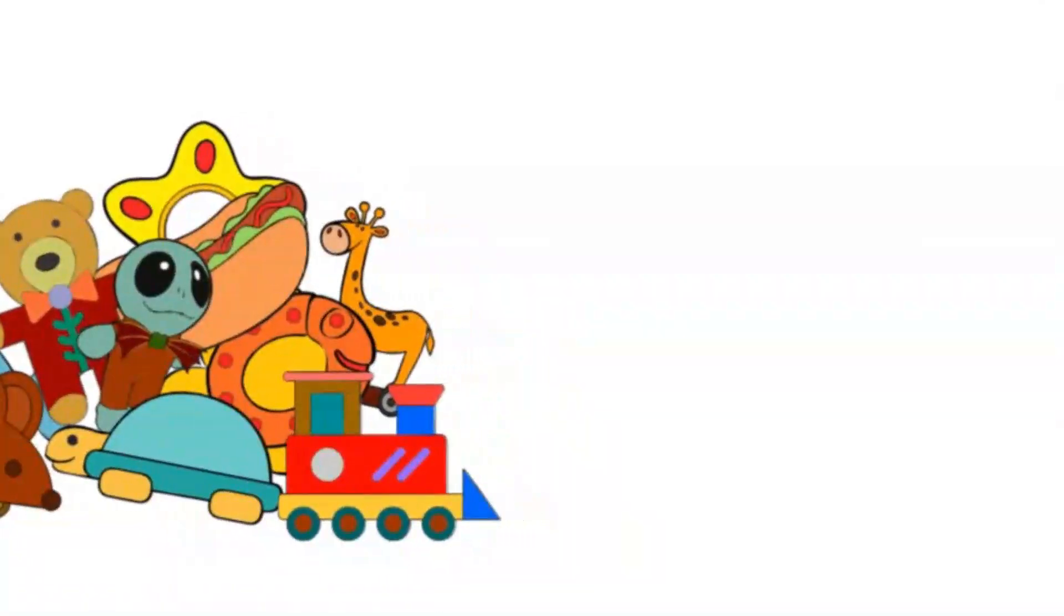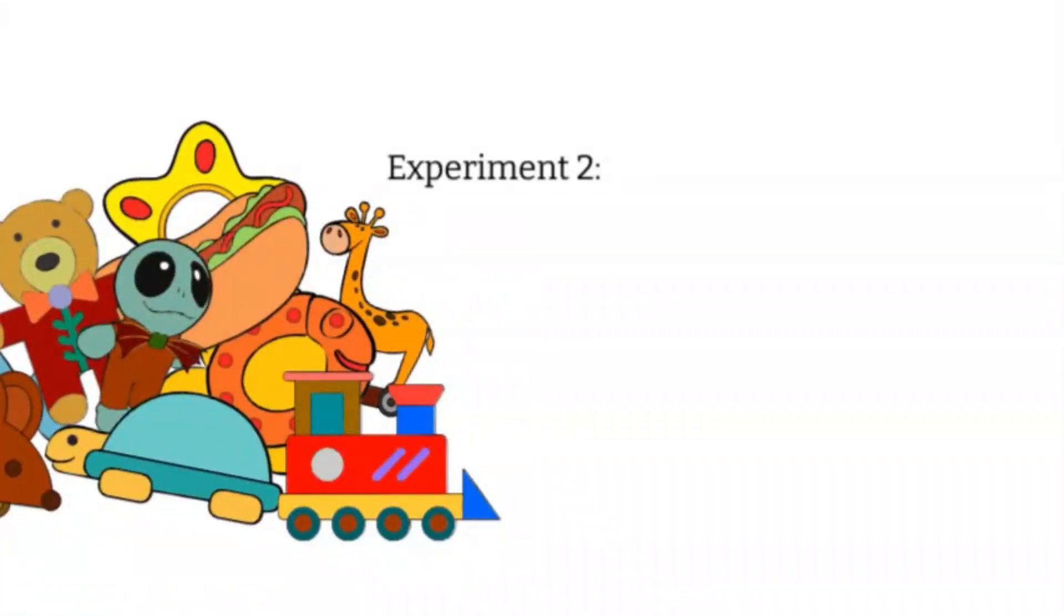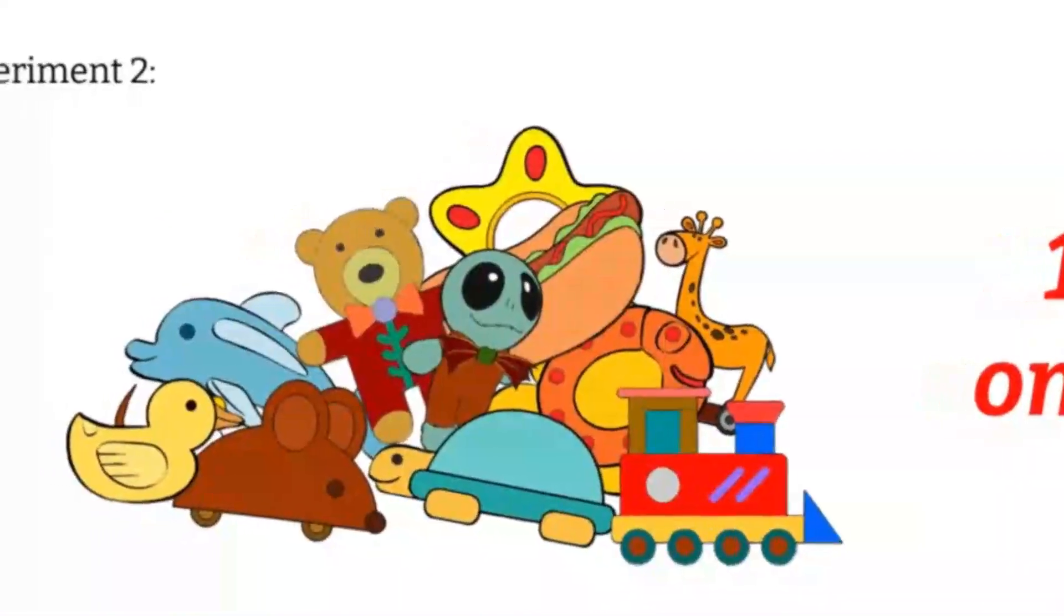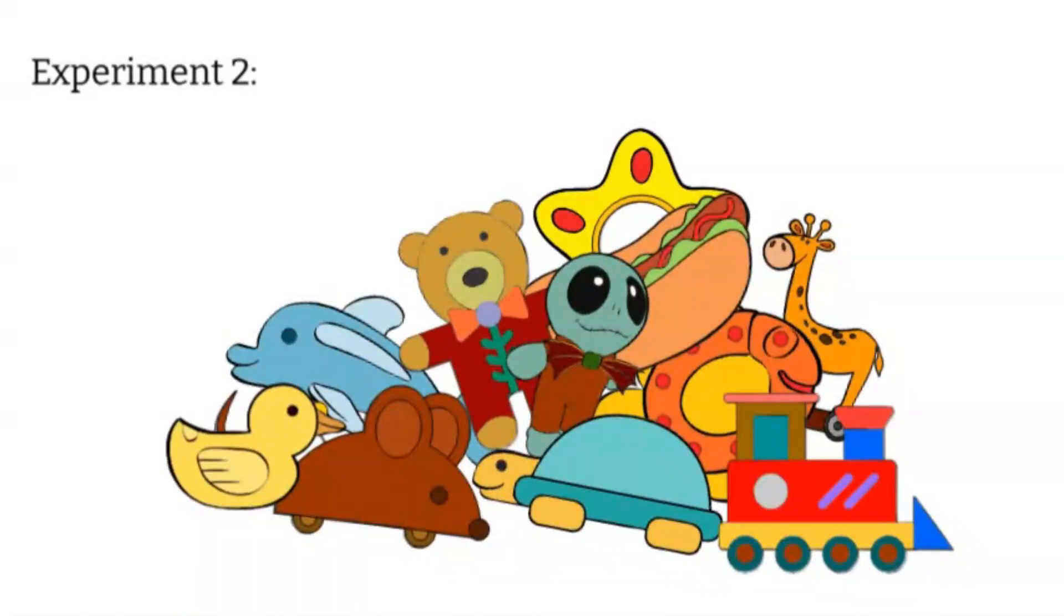In the second experiment, we doubled the difficulty level and asked the dogs to learn the names of 12 new toys in one week. Again, we tested their knowledge at the end of the week. We used the same testing procedure, but this time, in addition to the 12 new toys that were on the floor, we added 8 of the dog's old toys.